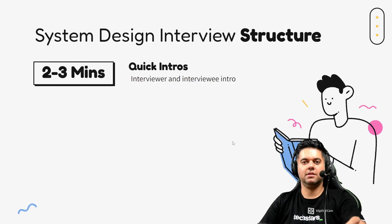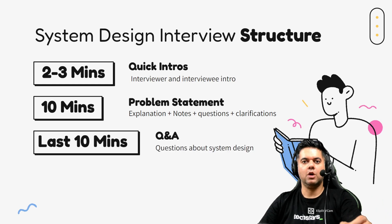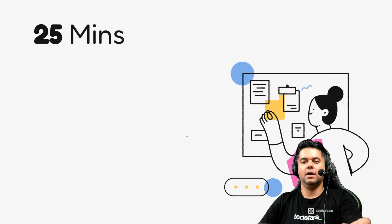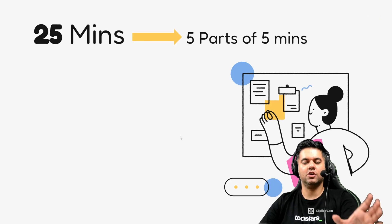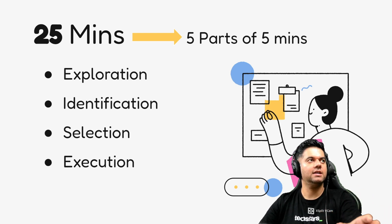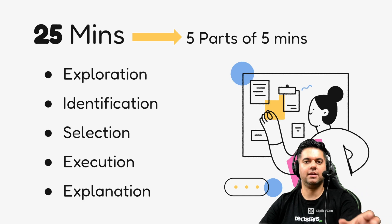The first two to three minutes are generally for quick introductions — and that's still a lot of time. To excel at the interview, you need to leave the last 10 minutes for Q&A. That means you're left with just 25 minutes to design the system and explain it to the interviewer. Ideally, you want to divide those 25 minutes into five parts of five minutes each, and those parts are: exploration, identification, selection, execution, and explanation.